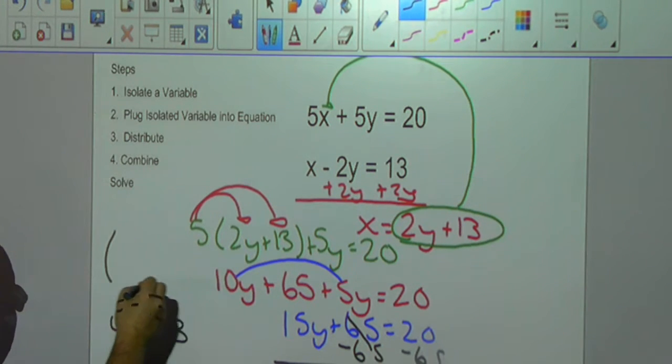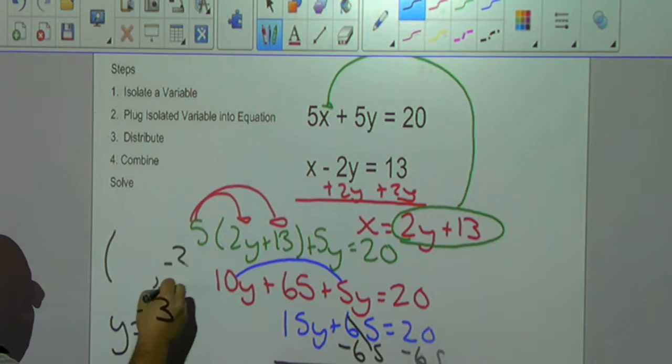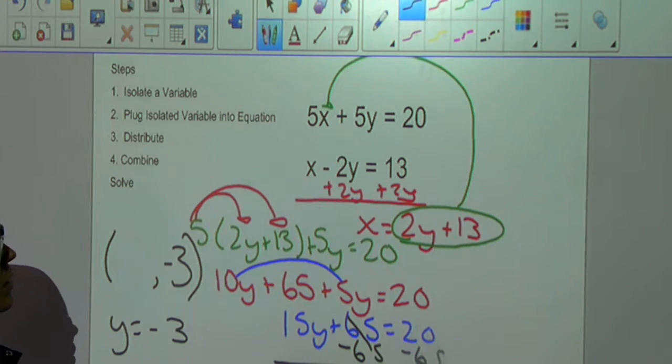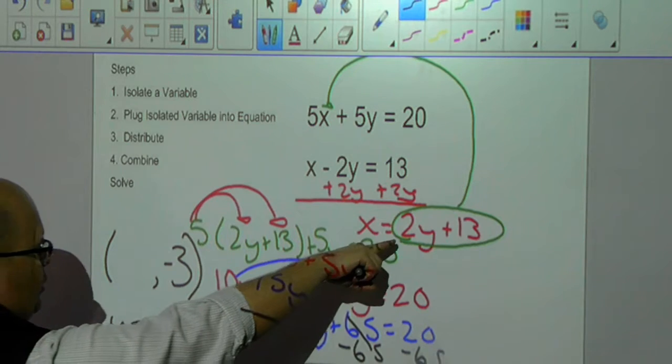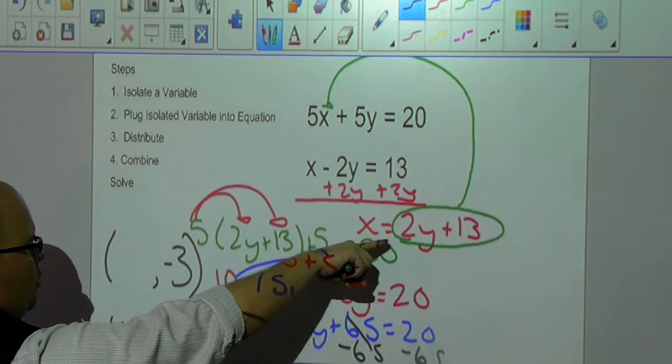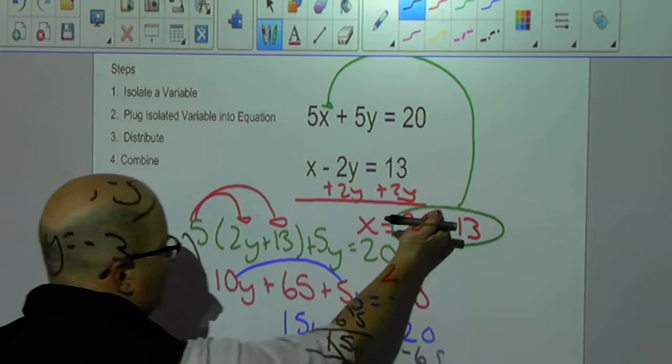However, it's a solution set that I'm looking for on the graph. That's my y coordinate of my solution set. To get my x coordinate, I'm just going to come back to my original equation. x equals 2y plus 13. I'm going to plug negative 3 in here.